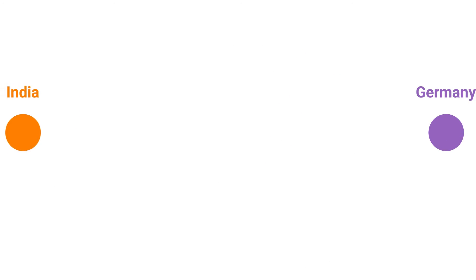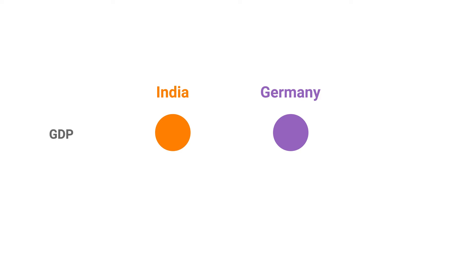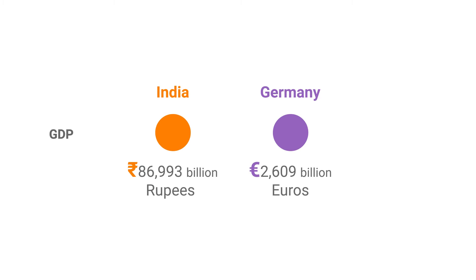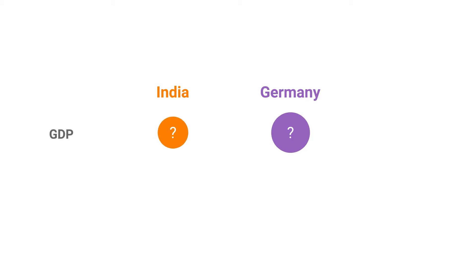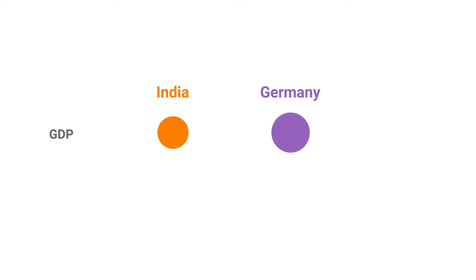These two bubbles represent the GDPs of India and Germany in their local currencies. But the sizes of the bubbles are not yet comparable, since one is in Indian rupee and the other in Euro. In order to compare them, they need to be in the same currency. So let's convert them into US dollars.